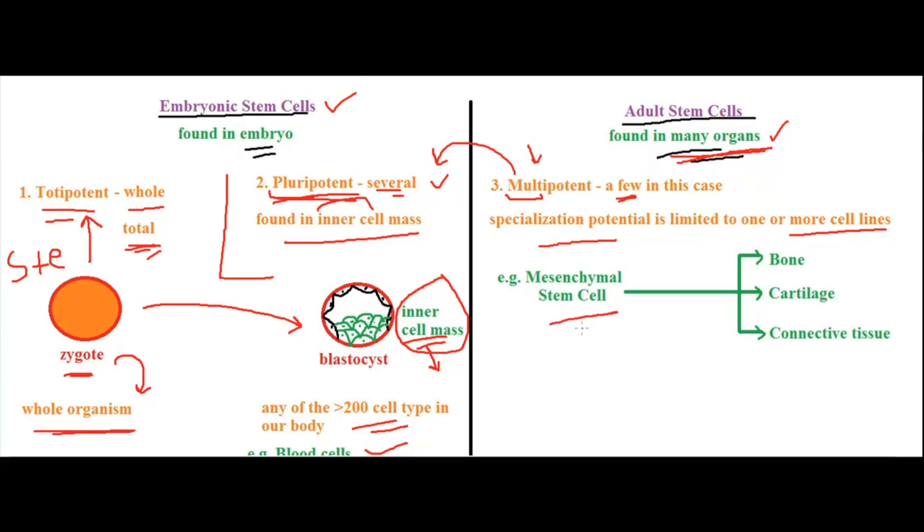For example, mesenchymal stem cells can give rise to bone, cartilage, connective tissue, adipose tissue, etc. You see, the specialization has increased as you go down the line. You have totipotent, the most superior, which can develop into the whole organism. Then you have pluripotent—the inner cell mass which forms all cell types in the body. And you have adult stem cells or multipotent stem cells that are much more specialized to form specific cell lines, like mesenchymal cells.